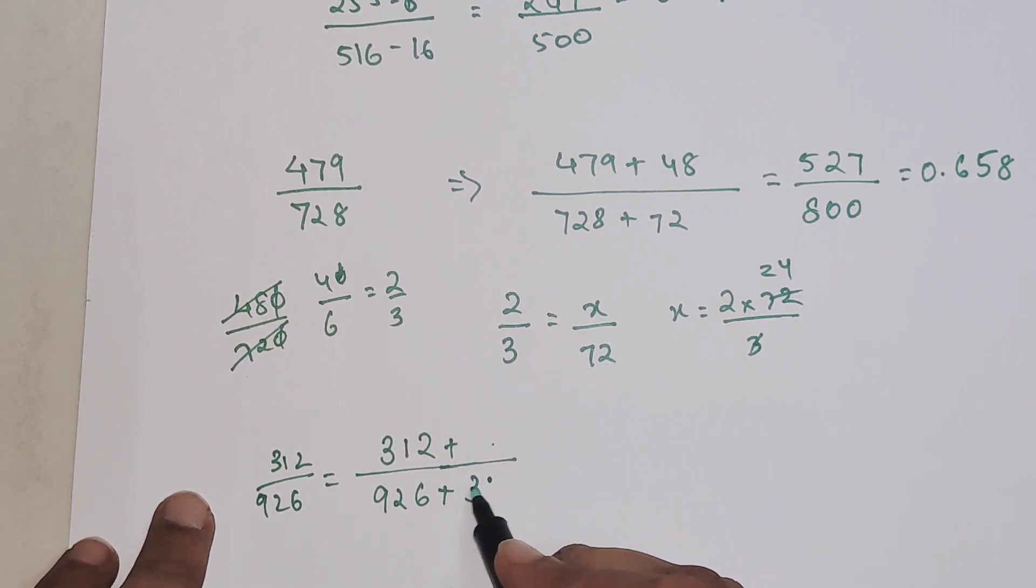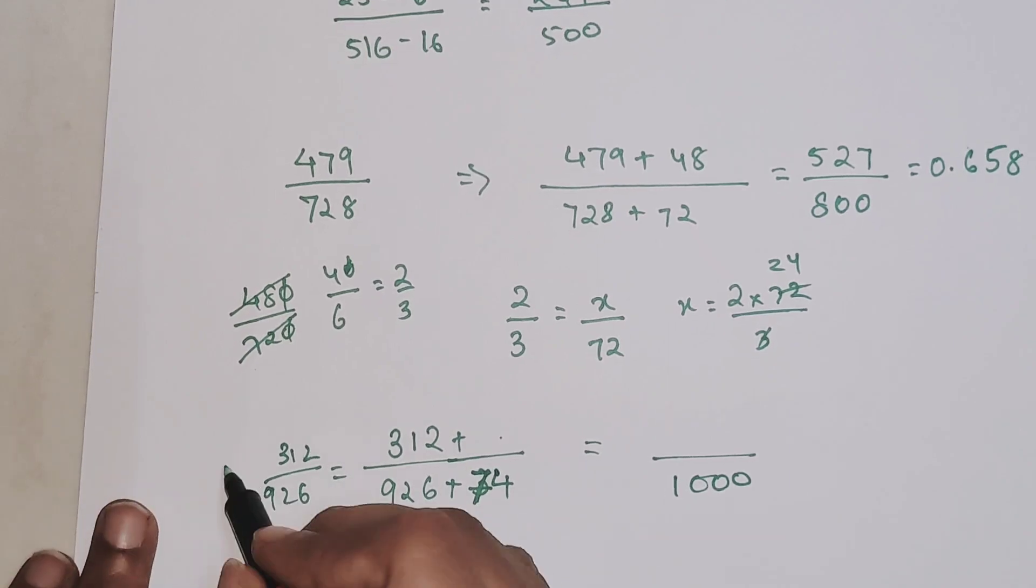If I want to make it 1000, I will add 74 to this, so this becomes 1000. Here, what you should be adding is, this is basically following a 1/3 ratio.